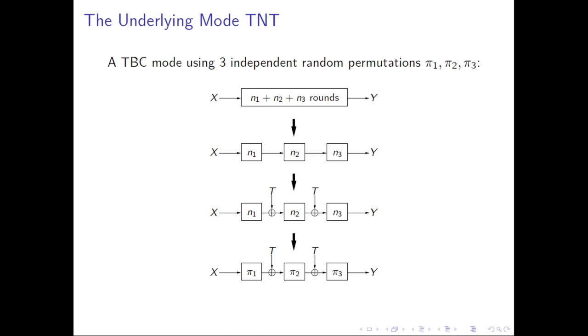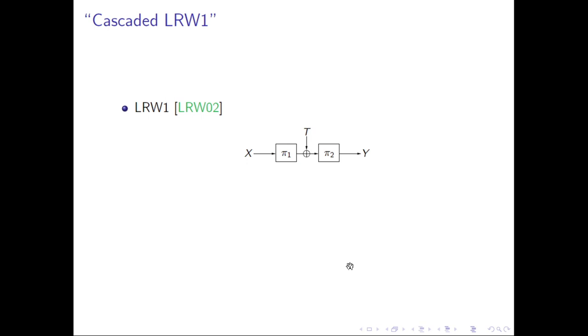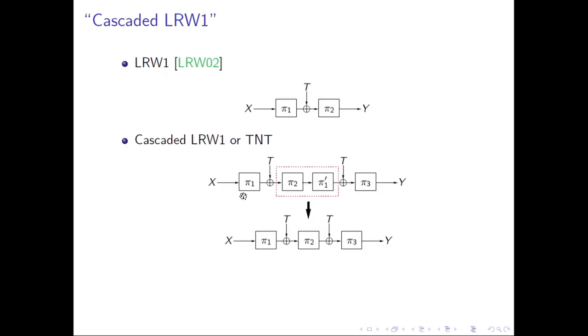Consider the construction. We could idealize the three chunks as three independent permutations PI1, PI2, and PI3. By this, we have idealized TNT mode of operation. This new mode can be viewed as cascaded LRW1. For this, let's recall the context. LRW1 is given in the initial tweakable block cipher paper. It just XORs the tweak between two permutations PI1 and PI2. Now, if we consider its cascade, we cascade two such constructions. And then the two middle permutations PI2 and PI1 prime can be merged as a single one PI2. So by this, we have TNT. So TNT is actually cascaded LRW1 mode.